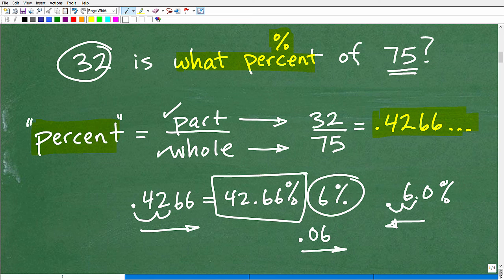So 32 out of 75, if you just kind of initially think about this, double this number for a second, that's 64.